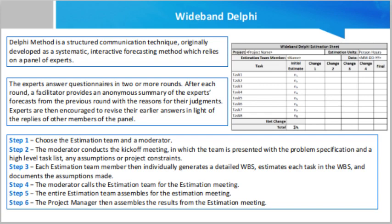Step 5 — the entire estimation team assembles for the estimation meeting. Step 5.1 — at the beginning of the estimation meeting, the moderator collects the initial estimates from each team member. Step 5.2 — the moderator then plots a chart on the whiteboard, plotting each member's total project estimate as an X on the round one line without disclosing the corresponding name. The estimation team gets an idea of the range of estimates, which initially may be large.